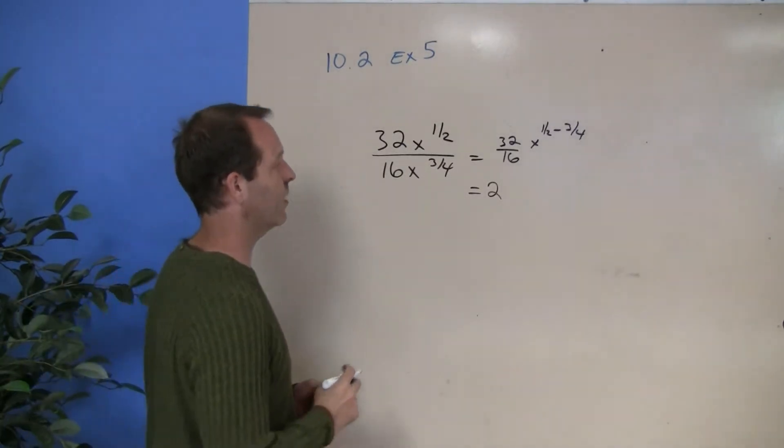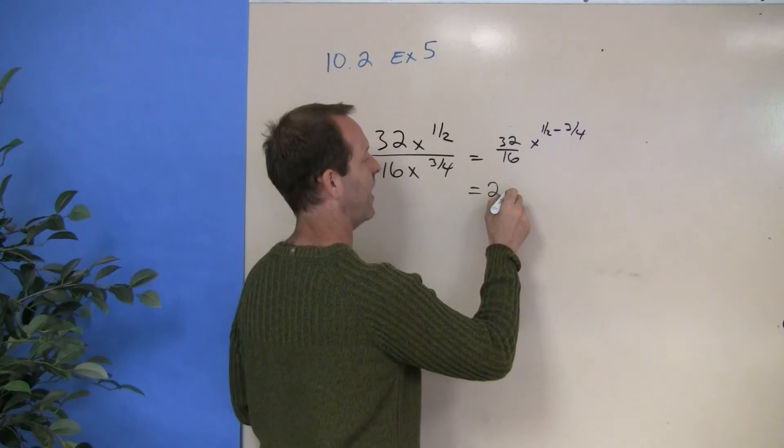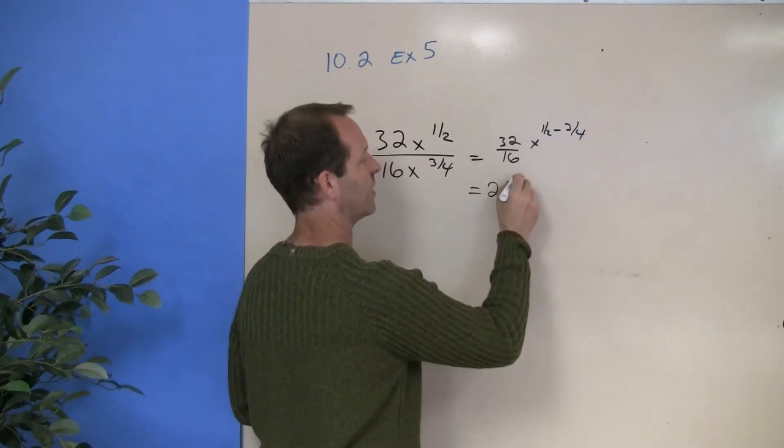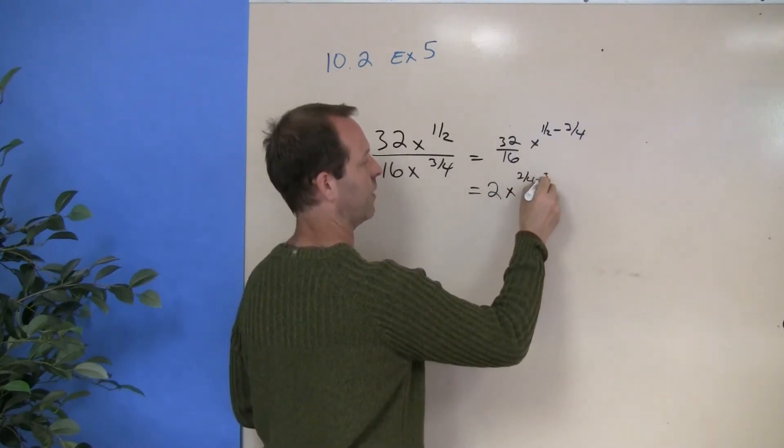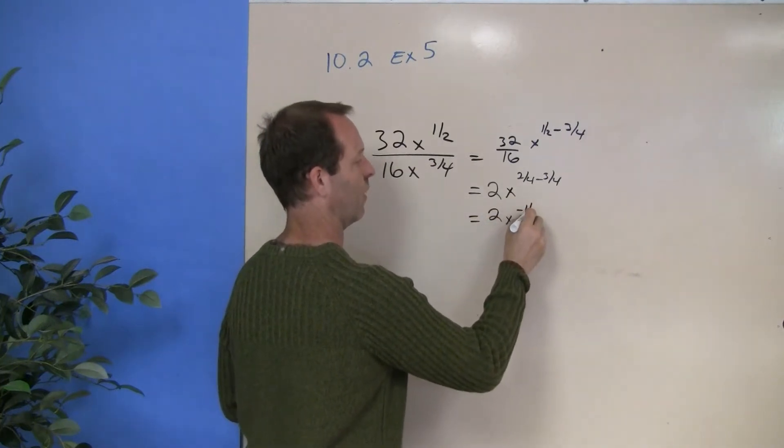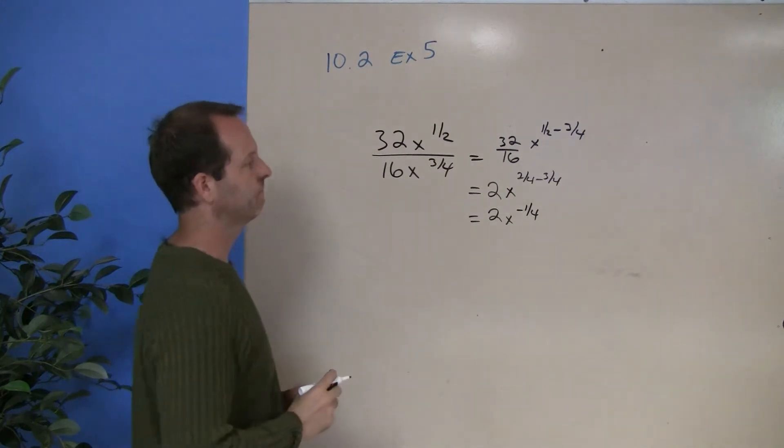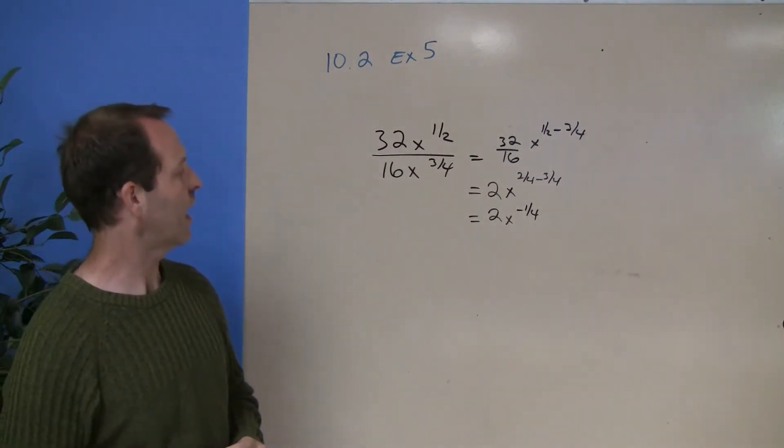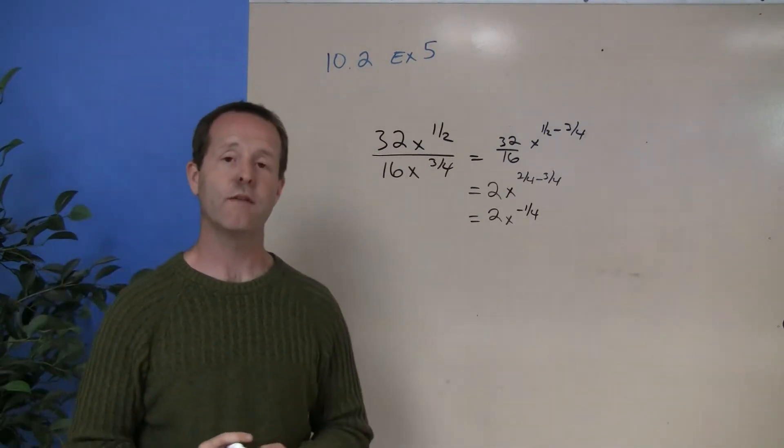You do the x to the 11/2 minus 3/4ths. How do we subtract? That's x to the 2/4ths minus the 3/4ths. 2x to the negative 1/4th. So I have 2 times x to the negative 1/4th.